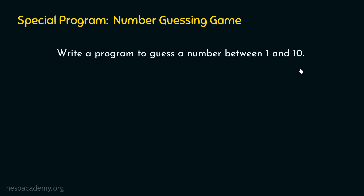We need to print these statements accordingly. If the guess made by the user is equal to the number generated, we will print 'You guessed it right.' I hope the problem statement is clear and the idea of what we need to do in our program is also clear. Now we are ready to write our program.